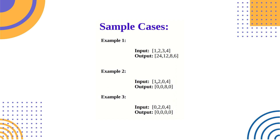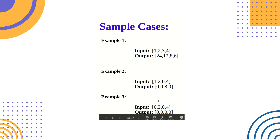If the input is [1, 2, 0, 4], the output would be [0, 0, 8, 0]. If the input is [0, 2, 0, 4], the output will be all zeros, because whenever we consider any index, the product will include at least one zero, making the entire product zero.